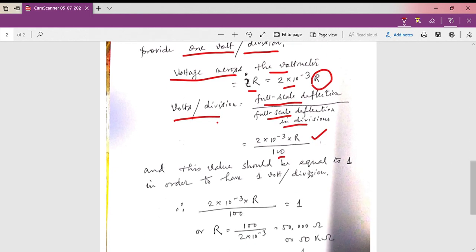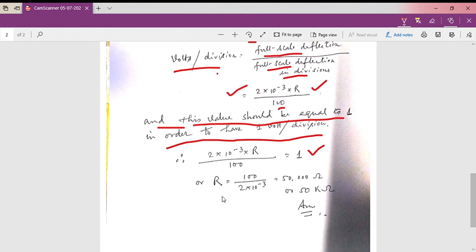If we do this, we obtain the volts per division in terms of capital R. This value should be equal to 1 in order to have one volt per division. So if we equate this to 1, we can easily find out the value of R, which is 50,000 ohm or 50 kilo ohm.